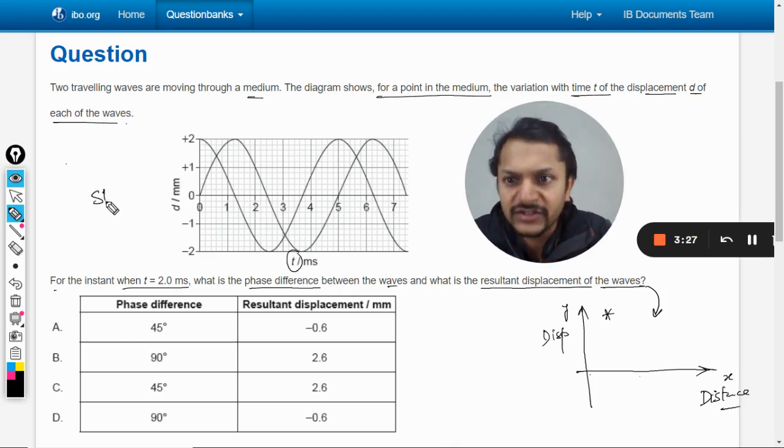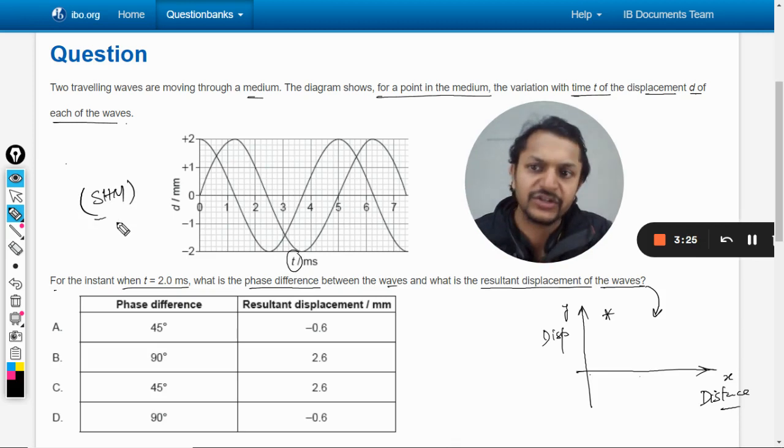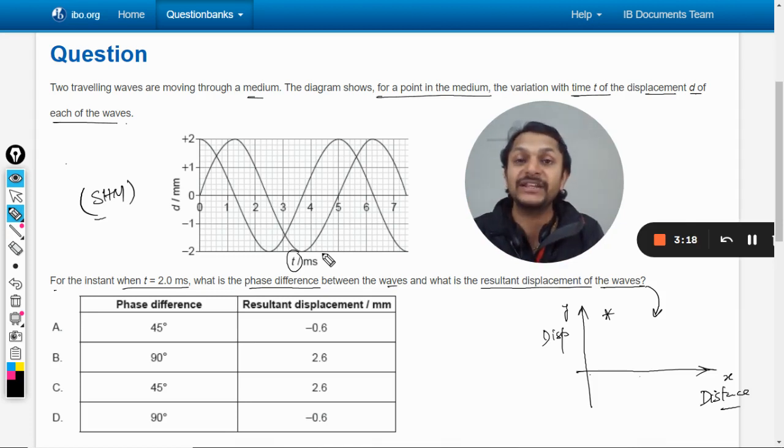Now this is giving us information about the simple harmonic motion. So this graph is about the simple harmonic motion that is completed by one particle. We are not actually concerned with the wave.